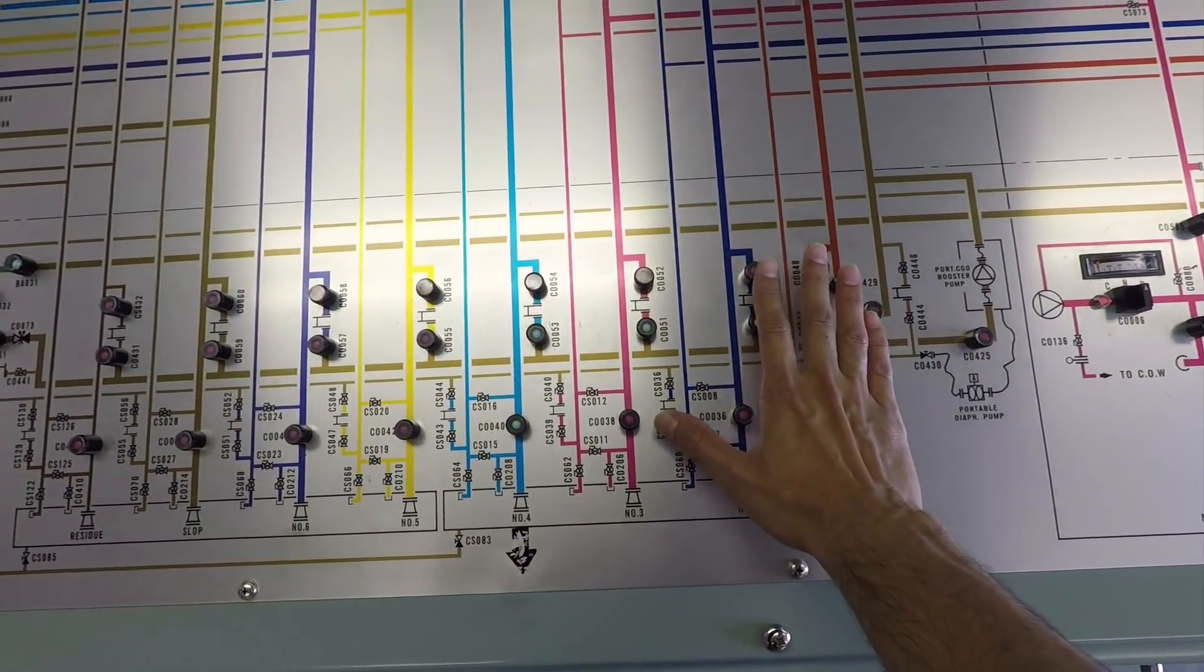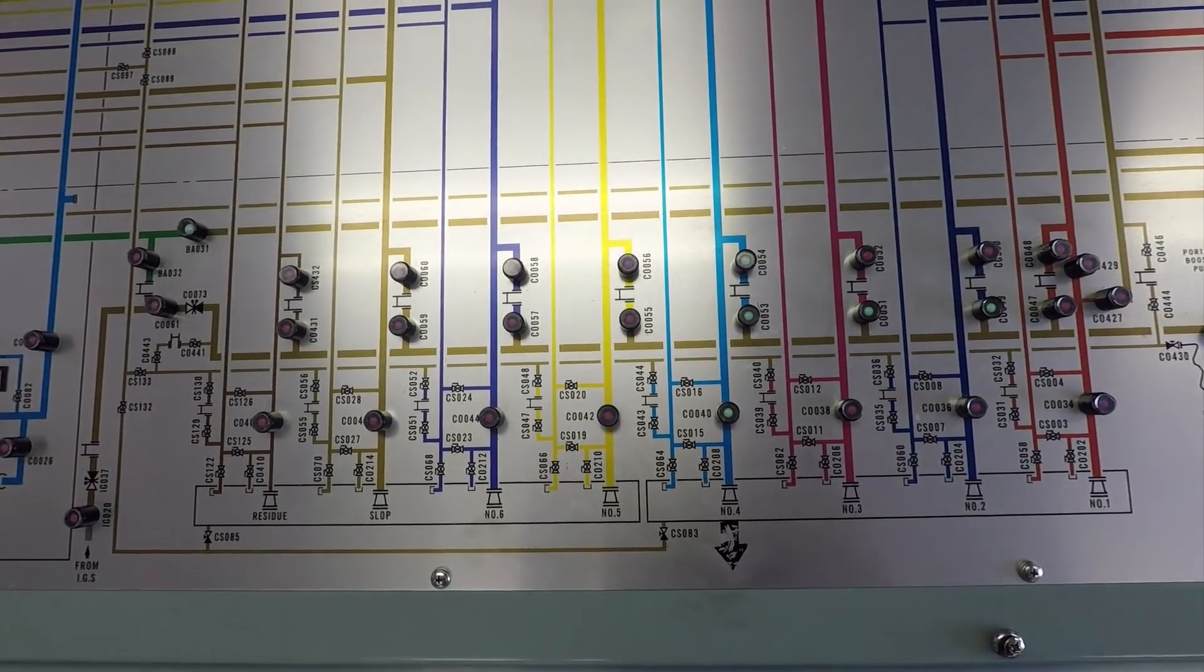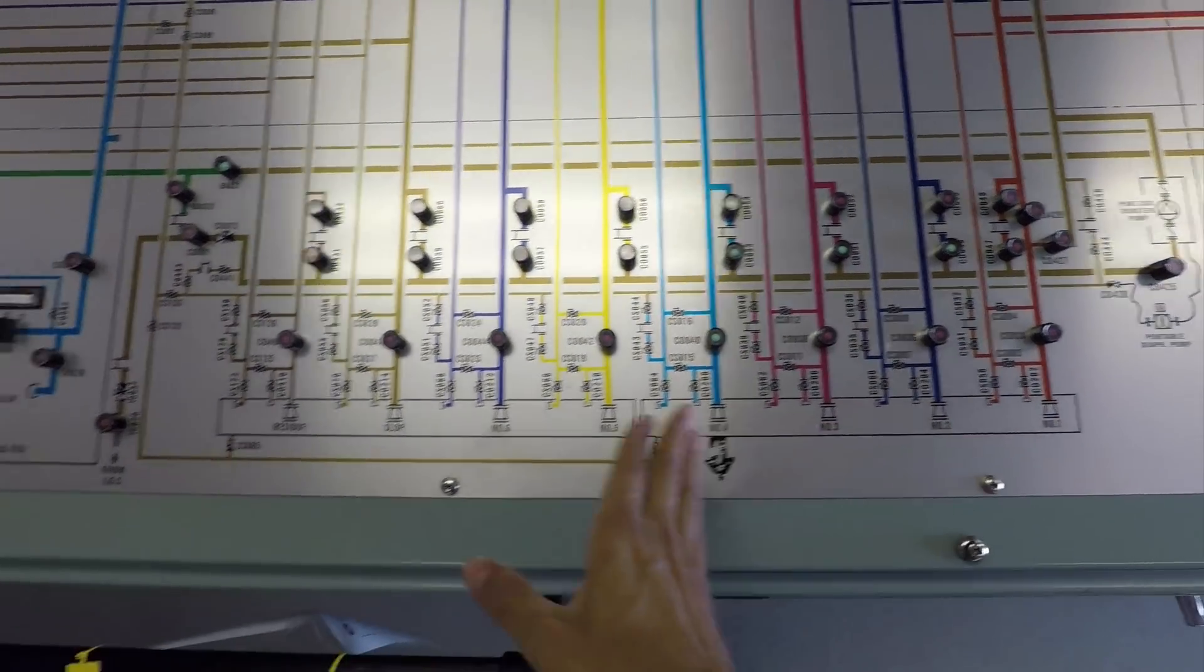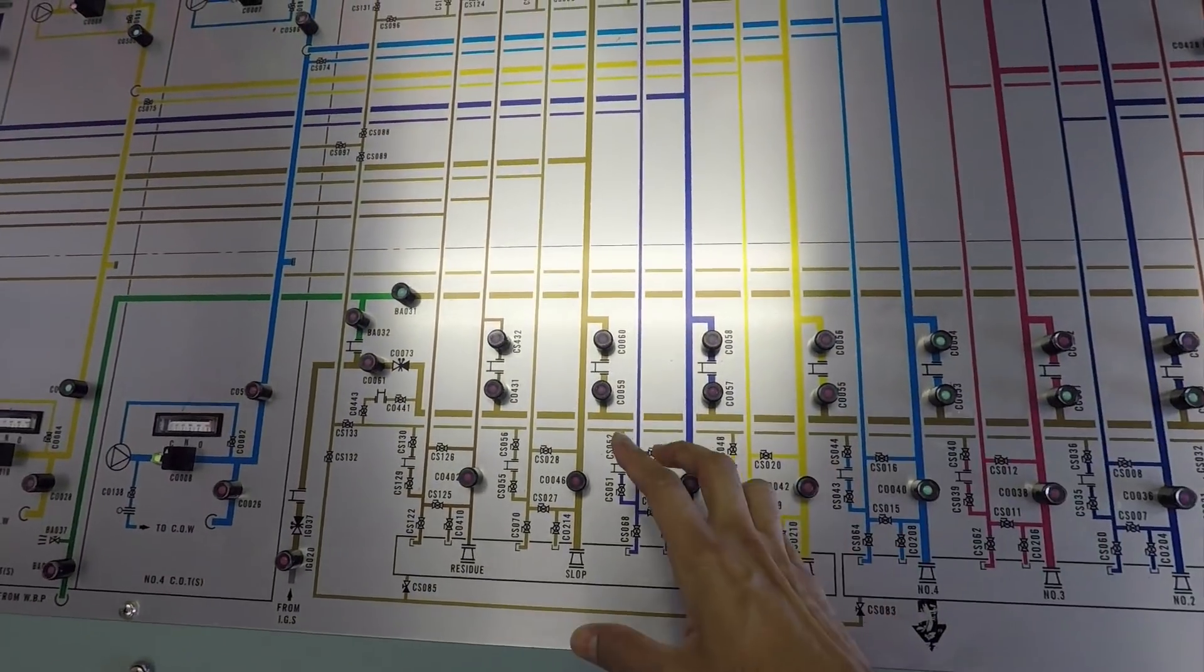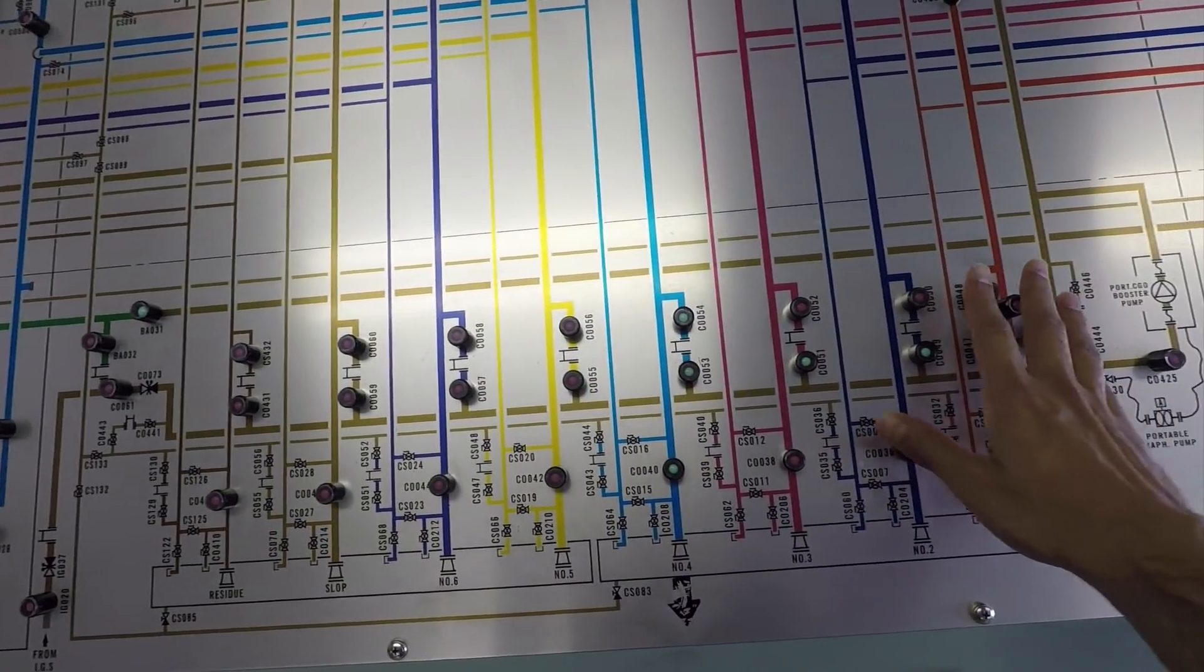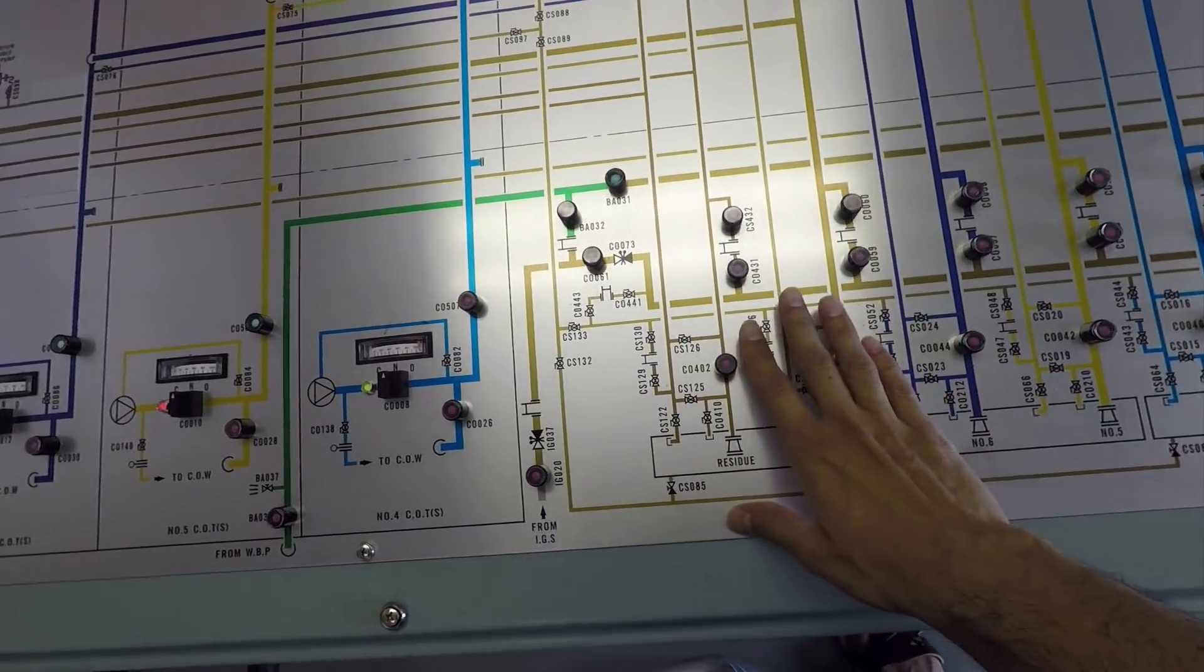This what you are seeing right now is the manifold. Manifold has seven manifolds, and all manifolds can be connected to each other using crossovers, and all these valves are manual valves to be operated on deck.